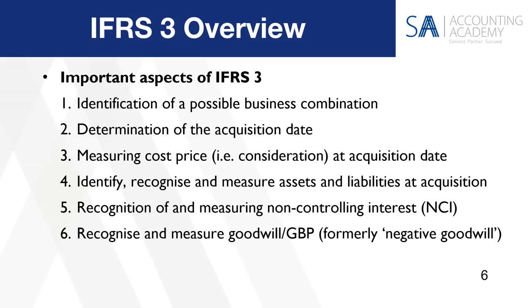Then step number six: how do we ultimately recognize and measure our goodwill or gain from a bargain purchase? GBP does not stand for Great Britain Pound — it is gain from a bargain purchase, which is the old negative goodwill. That basically means that the amount I paid — let's say 5 million rand for the business combination — compared to the fairly stated net asset value that I'm acquiring — let's say 6 million — obviously there's a difference. I underpaid instead of overpaid. So when I overpay, there's goodwill; when I underpay, there's a gain from a bargain purchase.